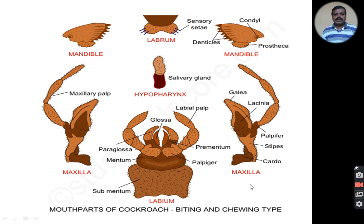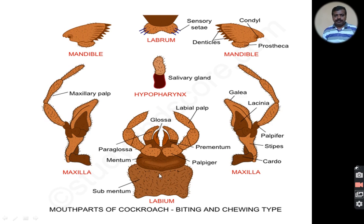This slide shows the mouthparts of cockroach. The mouthparts of cockroach are of biting and chewing type. You can see the upper lip, called the labrum, and on either side are the mandibles, which are the grinders responsible for cutting food into small pieces. Next is a pair of maxilla, the lower lip called the labium, and in the middle a short tongue-like structure called the hypopharynx. All these structures constitute the mouthparts of the cockroach.